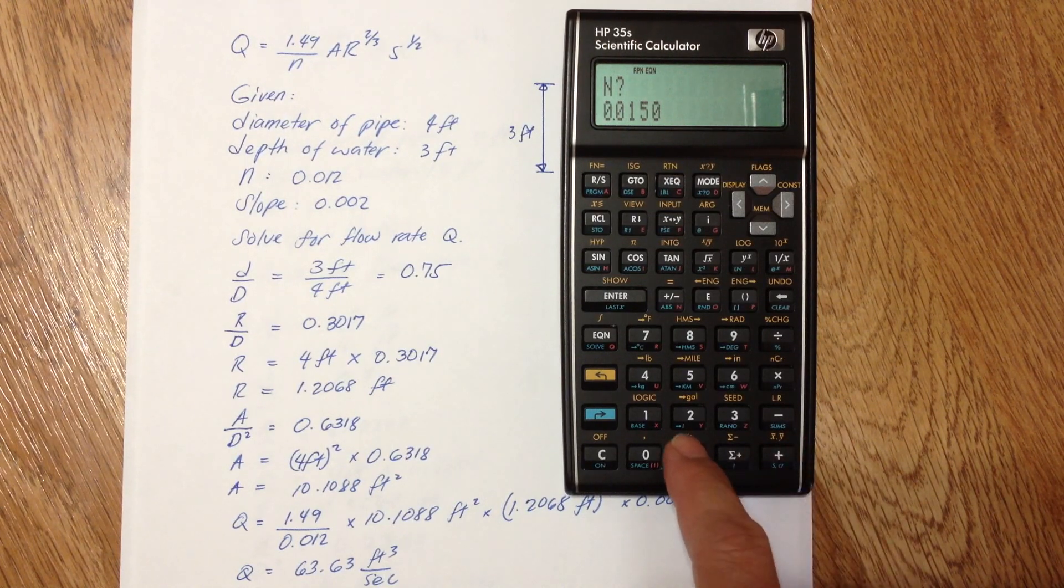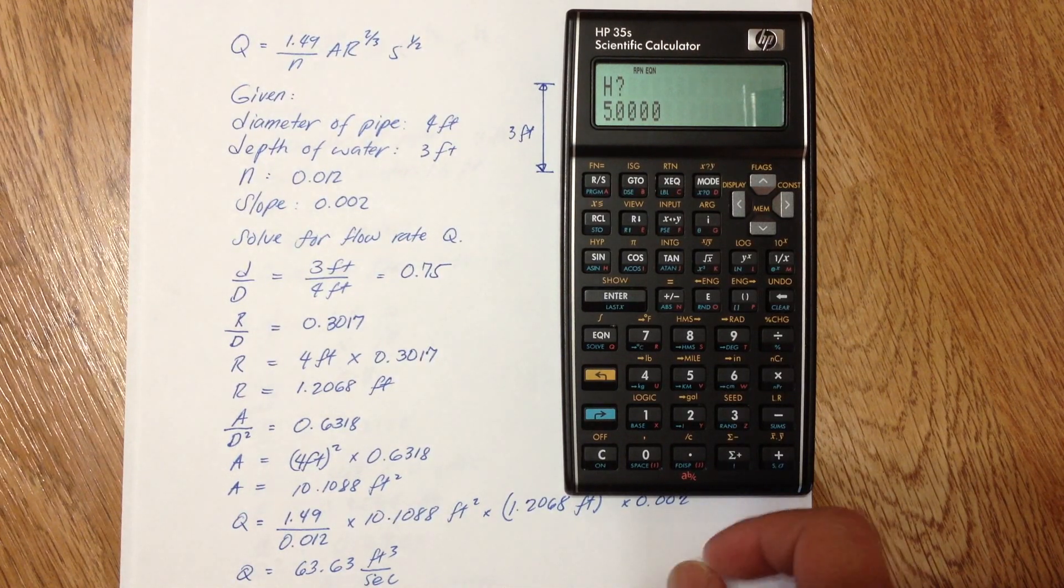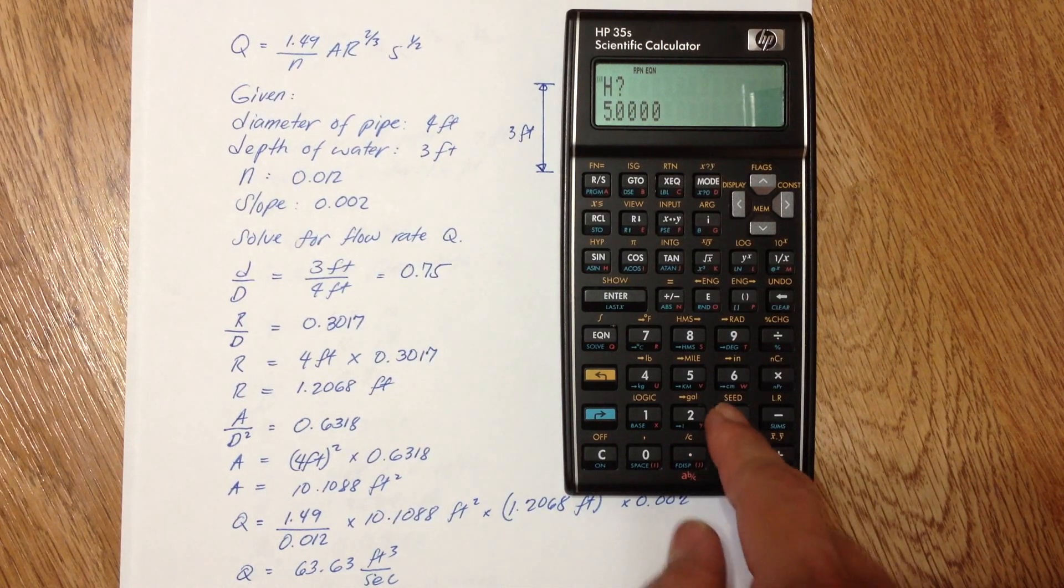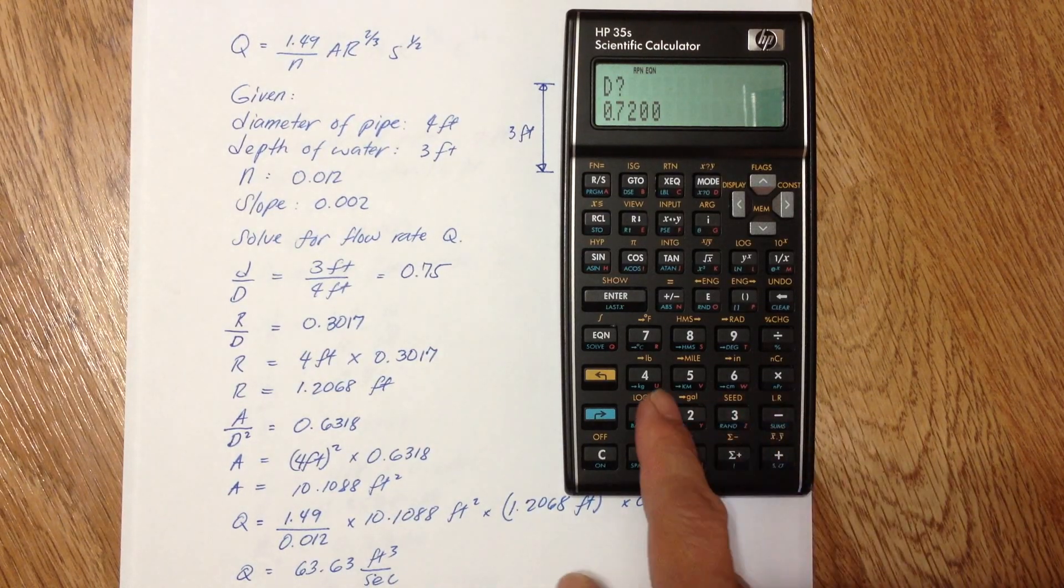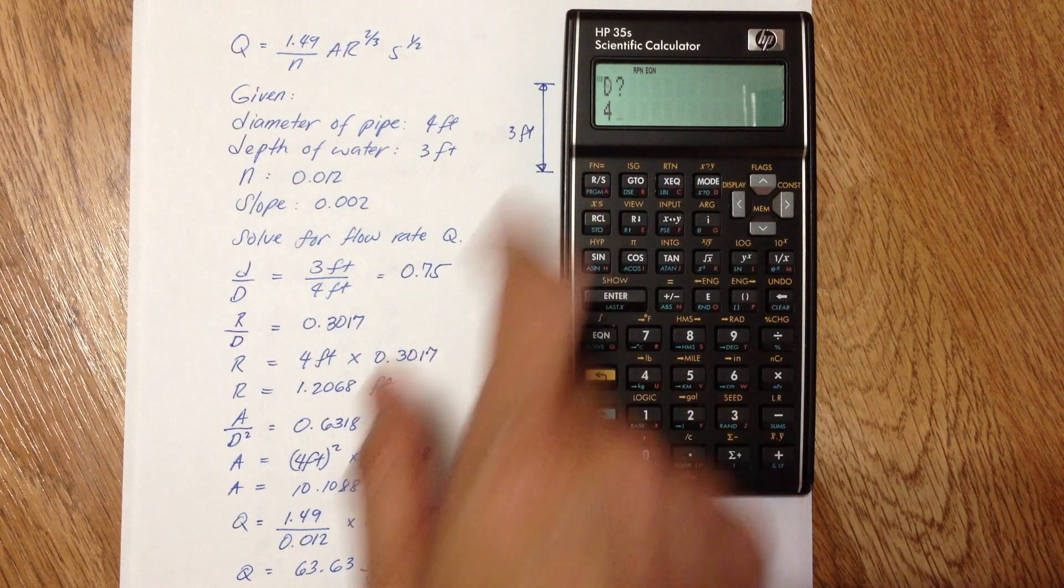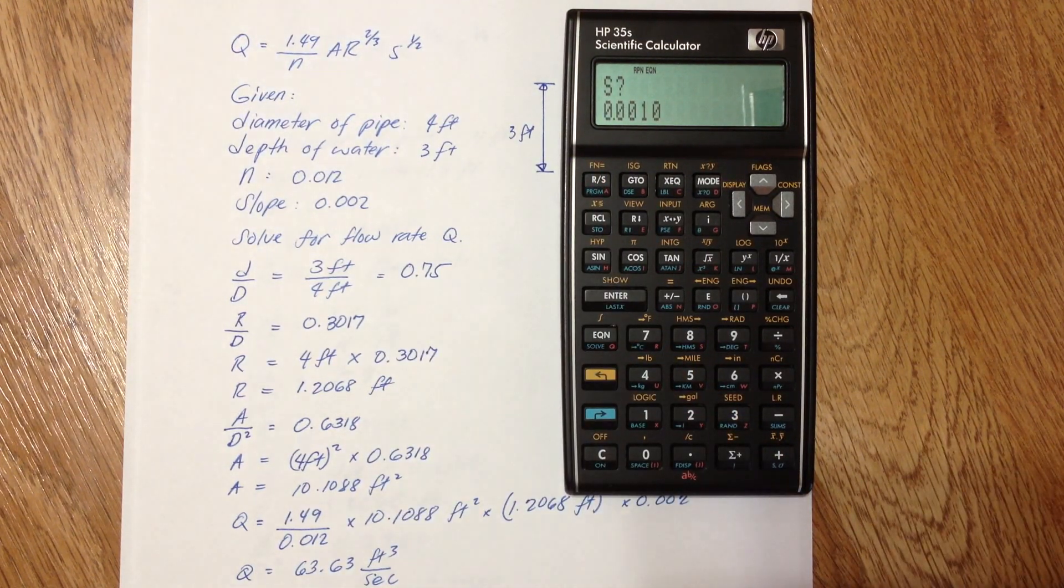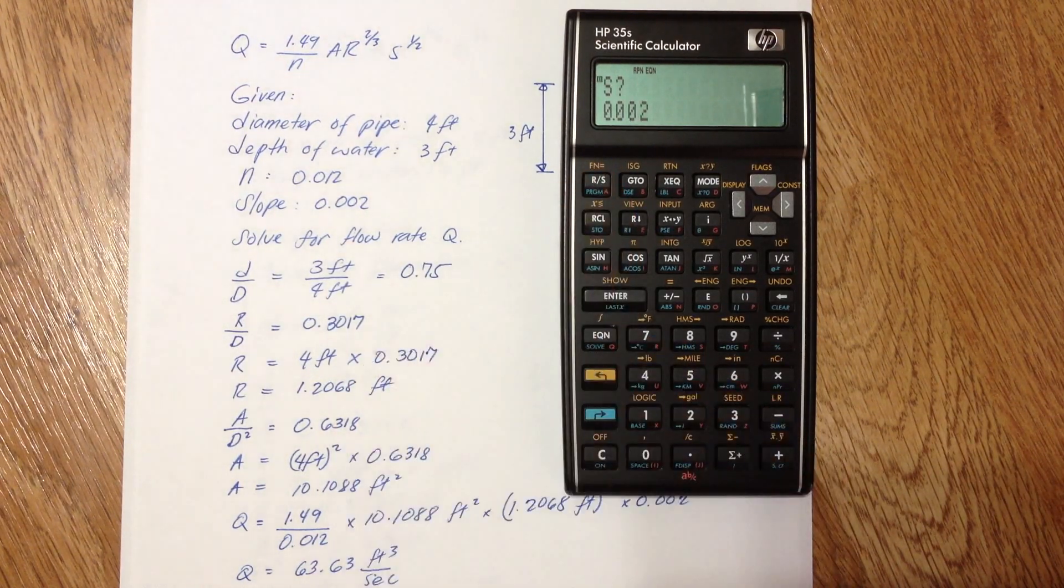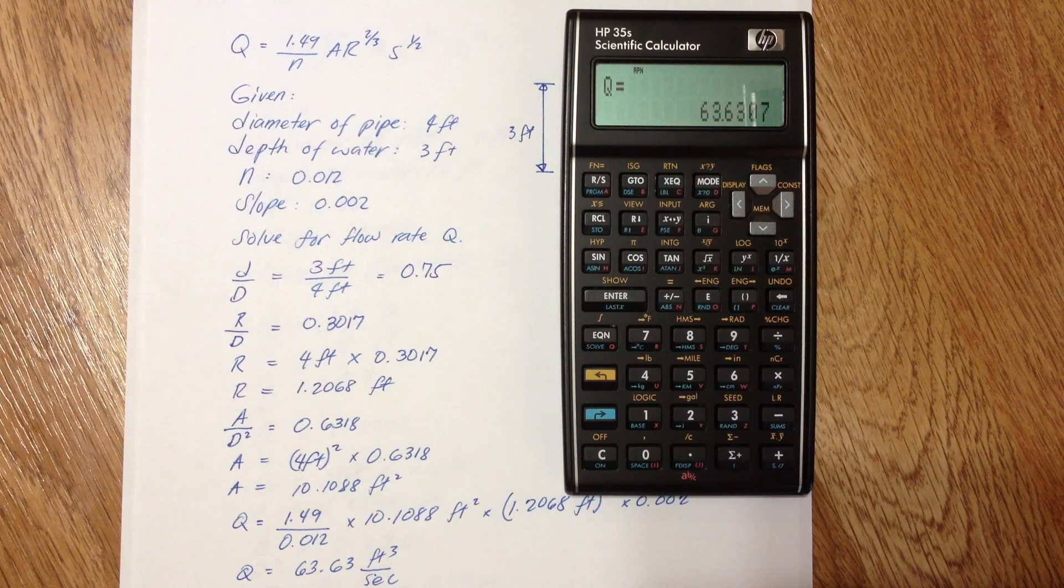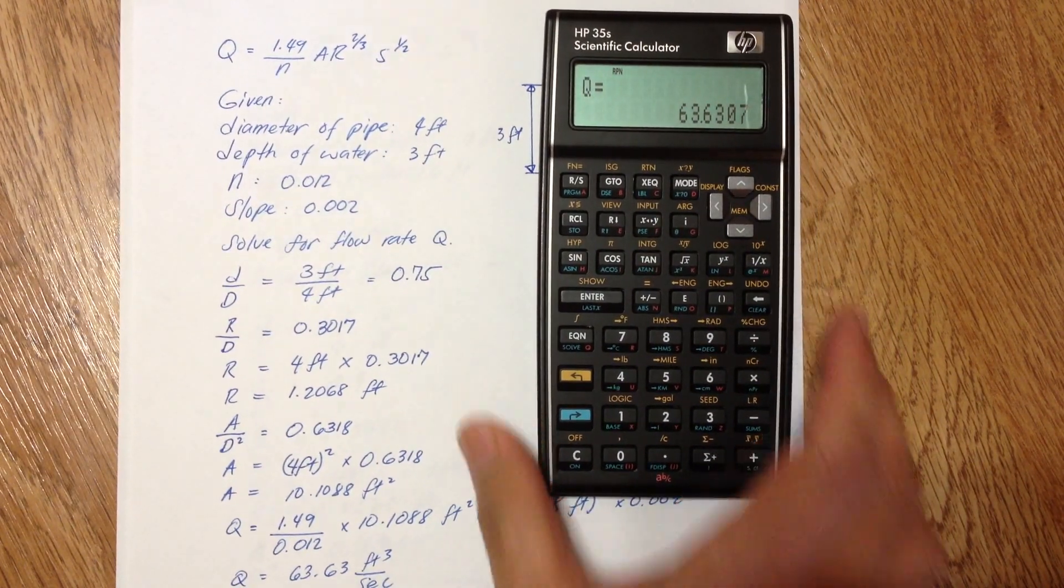Then R/S, n is the Manning's n coefficient which is 0.012. R/S, H is the depth of water which is 3 feet. R/S, D is the diameter of the pipe which is 4 feet. And of course S is the slope which is 0.002. R/S, and it's solving for Q. And there you go, it's 63.6307 cubic feet per second.